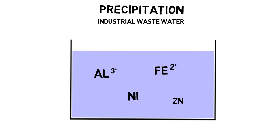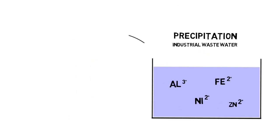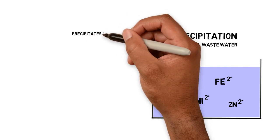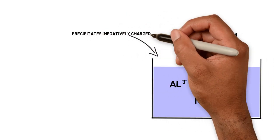The ionic metals are positively charged. Therefore, if we add negatively charged precipitates, the ionic metals will stick to it.